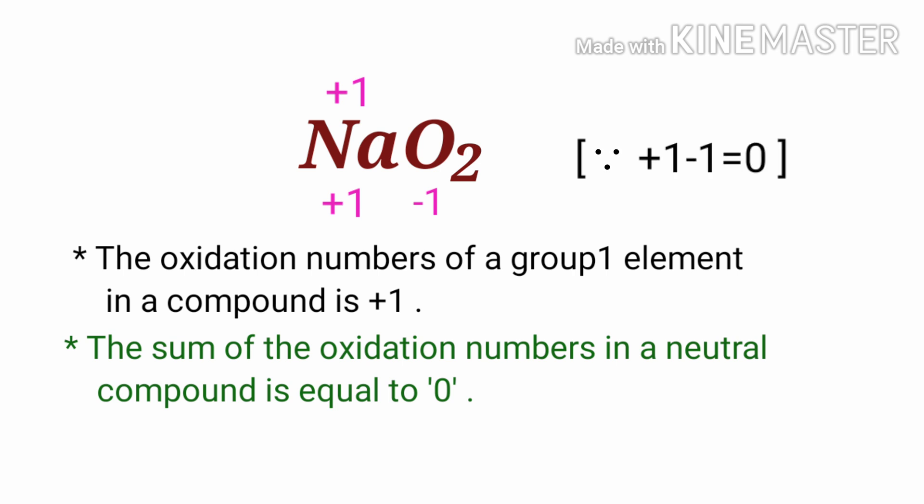In the O₂ element, there are two oxygen atoms present. Therefore, we can write the oxidation number of the oxygen is minus 1 by 2.